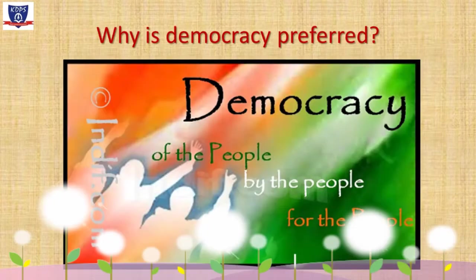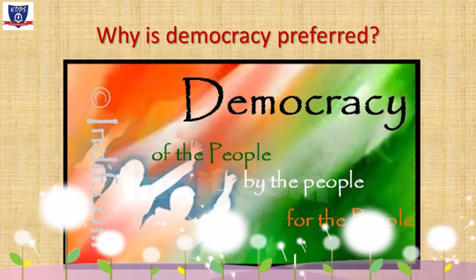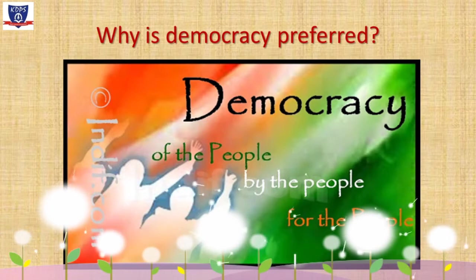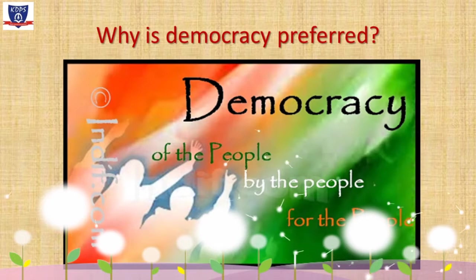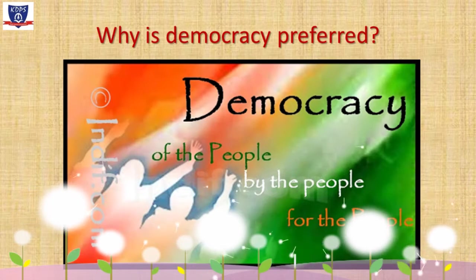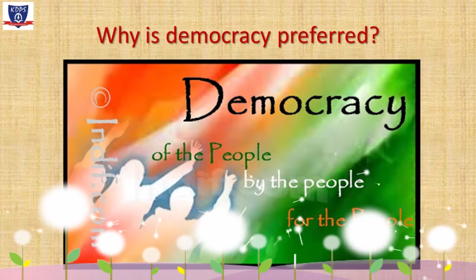But what makes democracy the most preferred choice of people across the world? Abraham Lincoln described democracy as a government of the people, by the people, and for the people. Hence, the supreme power lies with the people of the country. A democratic government should always work for the welfare of all the people.